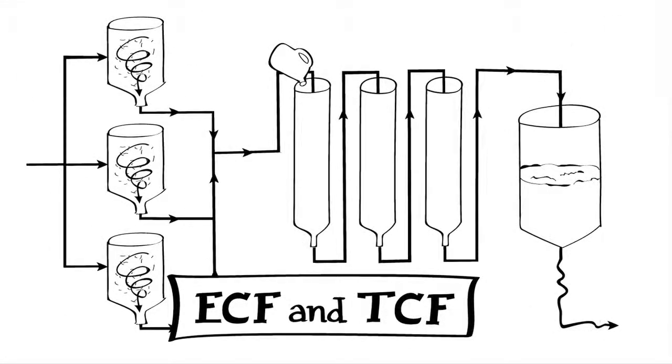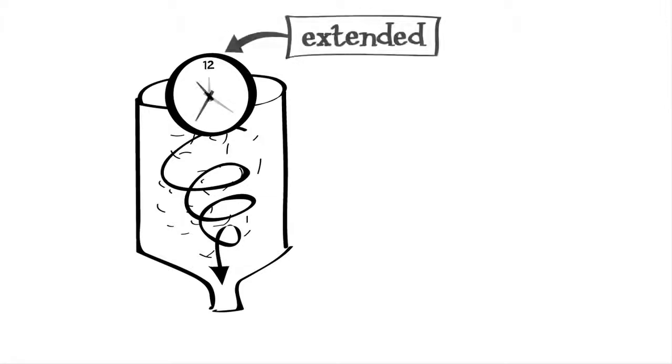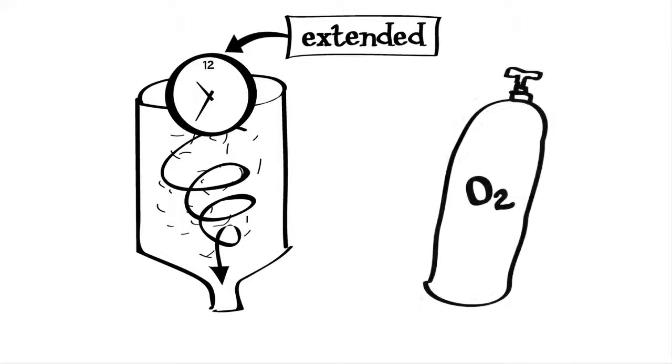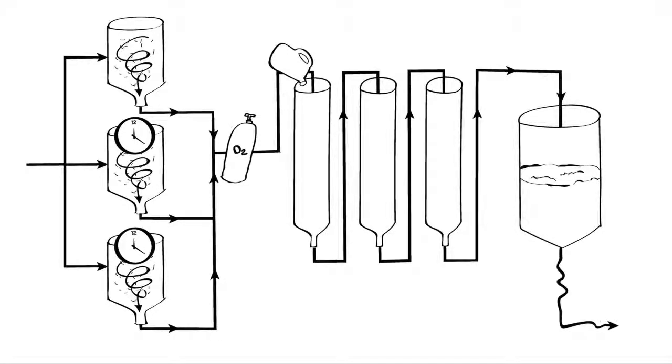Both ECF and TCF bleaching can use additional processes to reduce the lignin content of pulps prior to bleaching, beyond the lignin reduction that occurs in the traditional pulping process. The two processes to do this are called extended cooking and oxygen delignification. Either one or both can be used prior to the bleach plant. The lignin removed prior to the bleach plant is recovered and burned as fuel in the mill, removing as much as possible prior to the bleach plant, thereby reducing the amount of bleaching that needs to be done.